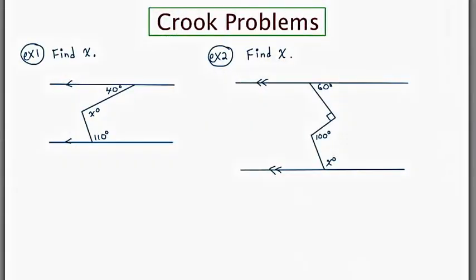A crook problem is when you have two parallel lines and the transversal that joins them has a bend in it, or a crook as we call it. The first thing you're going to want to do is wherever there's a bend or a crook in the transversal, you're going to want to put a dot there.